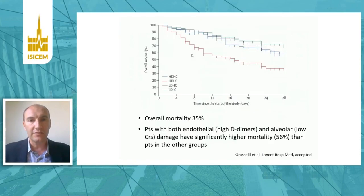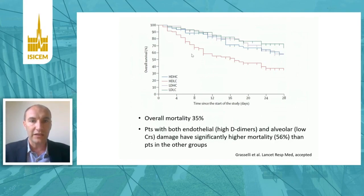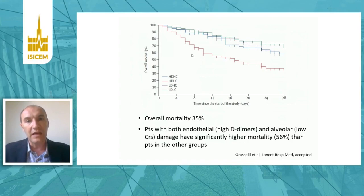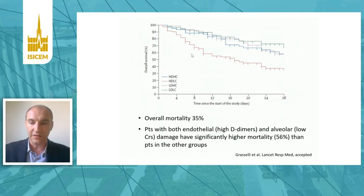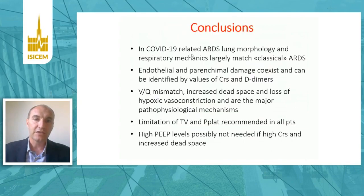Kaplan-Meier survival curves showed that patients with both endothelial/vascular damage (high D-dimers) and parenchymal damage (low compliance) had significantly higher mortality than other patients. Overall mortality in the entire population was 35%, but the subgroup with both high D-dimers and low compliance had mortality exceeding 50%.